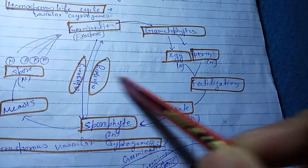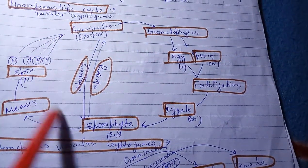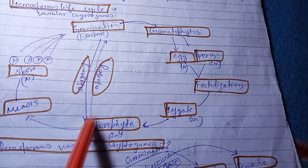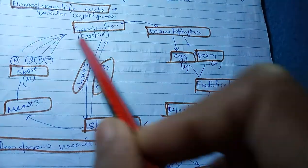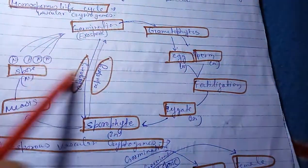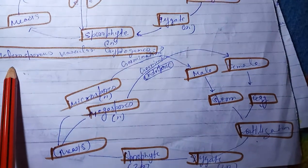This partition is called apospory and apogamy. This part after meiosis and after sporophyte undergoes meiosis to form spores and germinate. This process, this part of life cycle, is called apospory and apogamy.